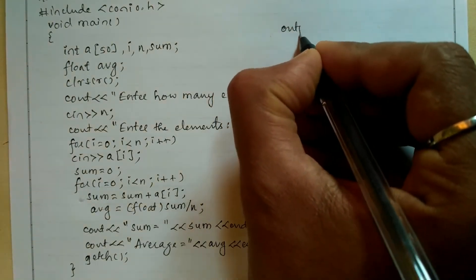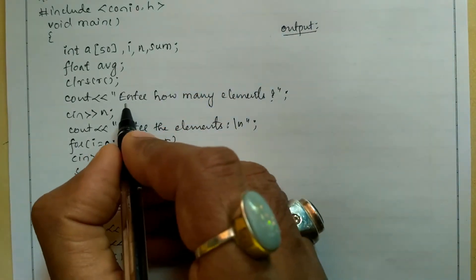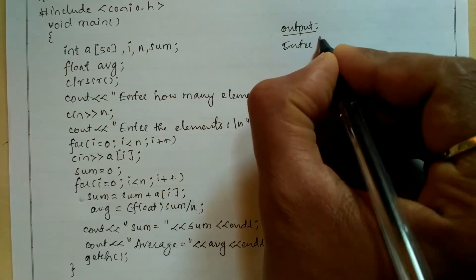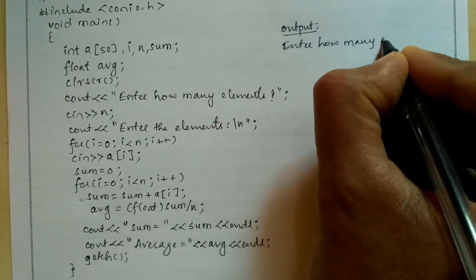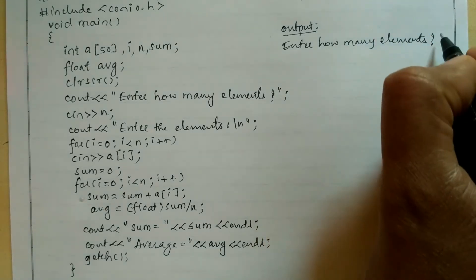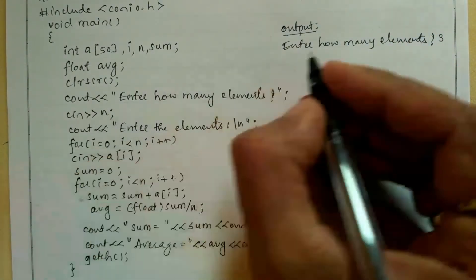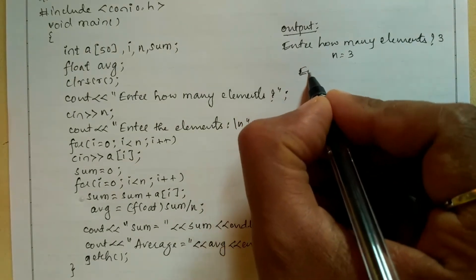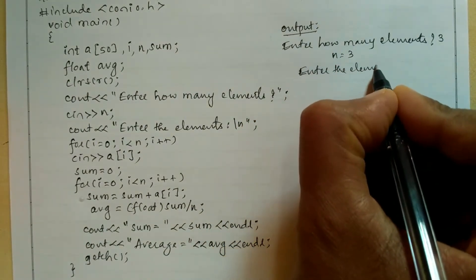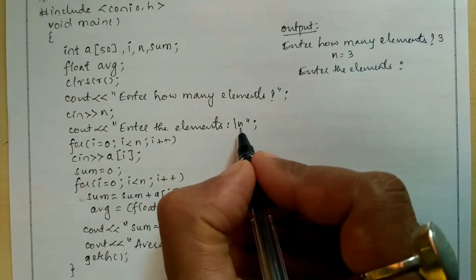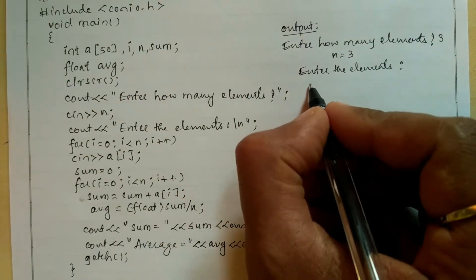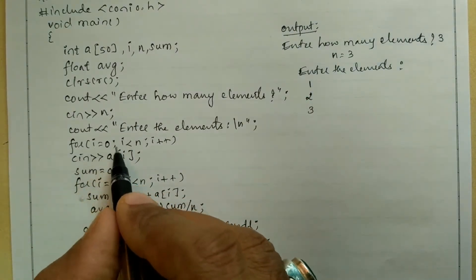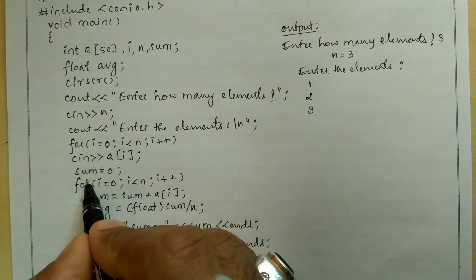Now let us take an example. Once we compile and run this program it will ask the user 'enter how many elements.' I have entered 3, so n value is 3. Now it is going to ask the user to enter the elements — 'enter the elements' — and because of the backward slash n the cursor comes down to the next line. For example I am going to insert elements 1, 2, and 3, which are received through the for loop using the cin statement.